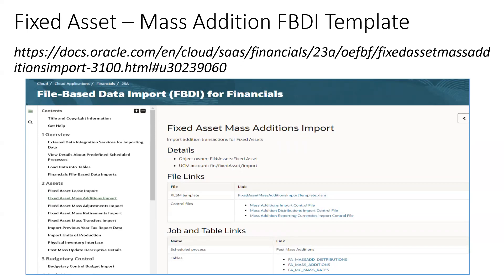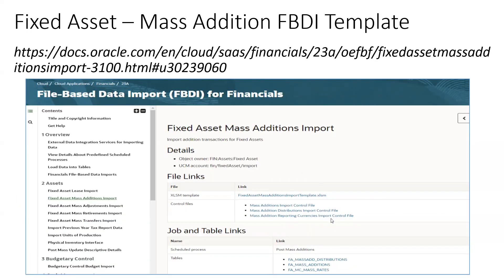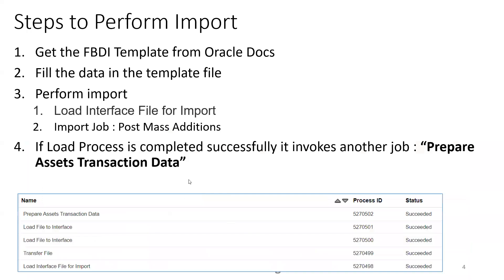This is a link for the purpose of getting the latest template. Once you get the template, the next step is to fill up the data, and then we have to run a job called Load Interface File for Import. And the import job — if you observe the earlier slide — we have to use Post Mass Addition as the import job, and then we just need to run it.